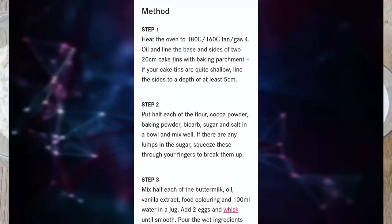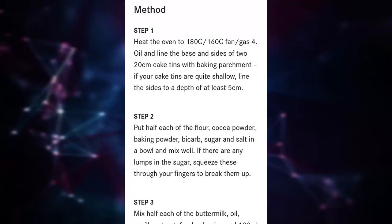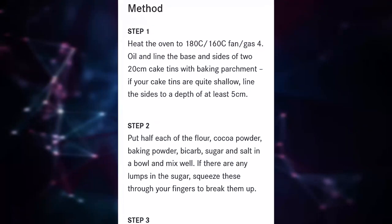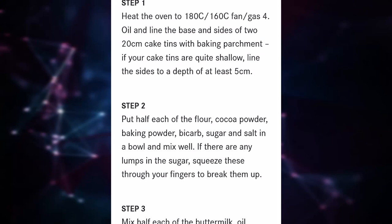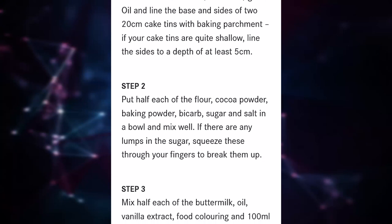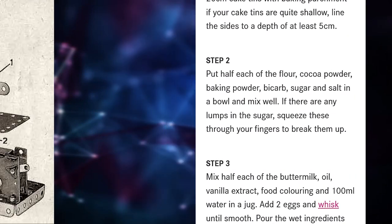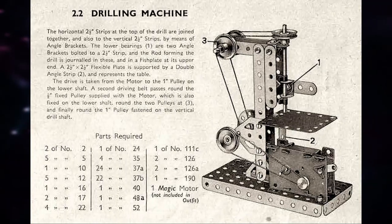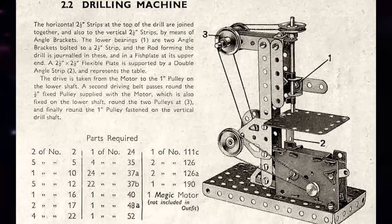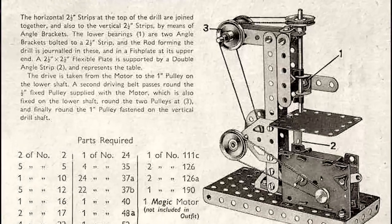To create the final object, you also need the instructions on how to build it — in cake making, called the recipe. We have called this the template, because it is more of an archetypal model that can be copied.